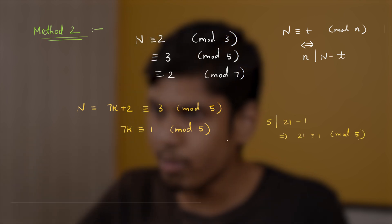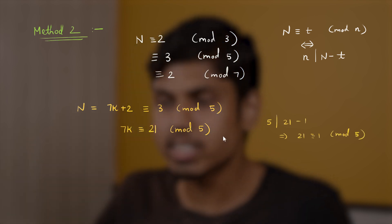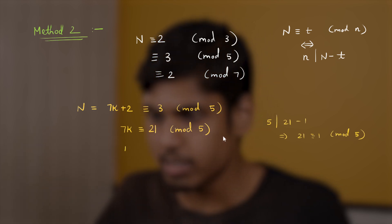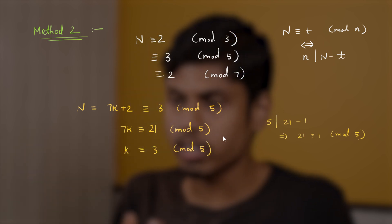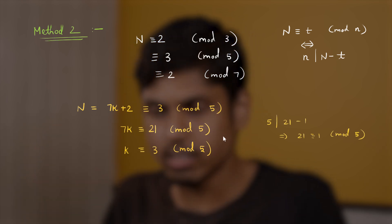So this shall imply 21 is congruent to 1 mod 5. So if I replace 1 with 21, we can cancel the 7 in the LHS, right? So this implies k is congruent to 3 mod 5. So we got k congruent to 3 mod 5. Let's substitute it back in the first equation of n equal to 7k plus 2.